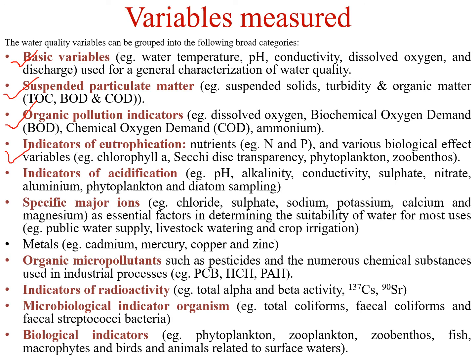Indicators of eutrophication include nitrogen and phosphorus — the two major nutrients. If their concentration increases in any water body, there is an increased chance of eutrophication. Biological effects variables like chlorophyll A, Secchi disk transparency, phytoplanktons, and zooplanktons are also indicators. Acidification can be assessed by measuring pH, alkalinity, conductivity, sulfates, nitrates, ammonium, phytoplanktons, and diatom sampling.